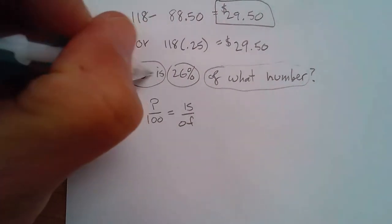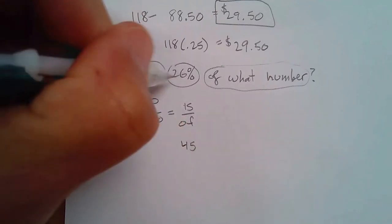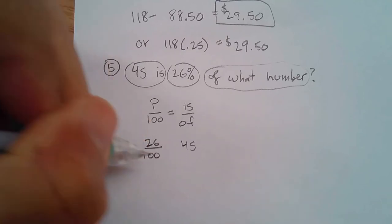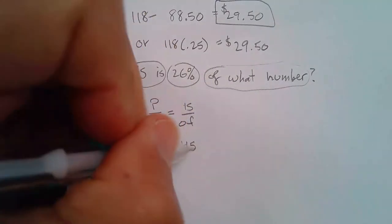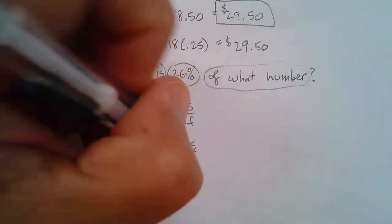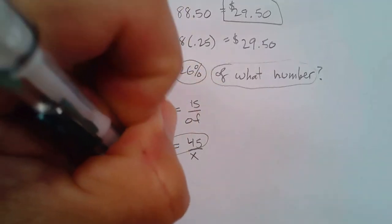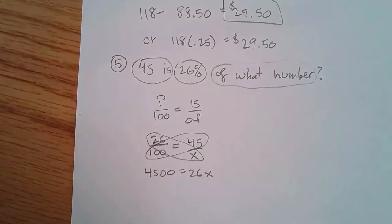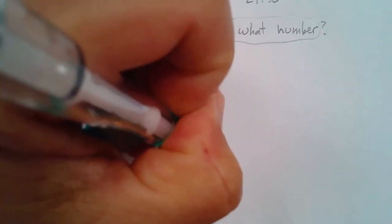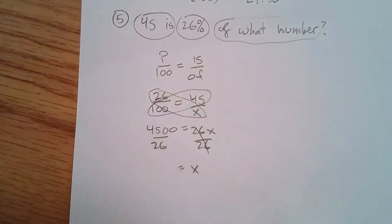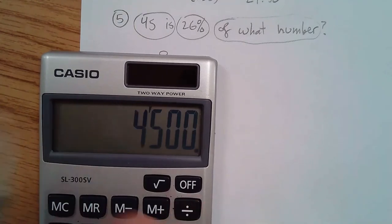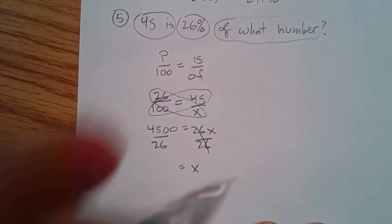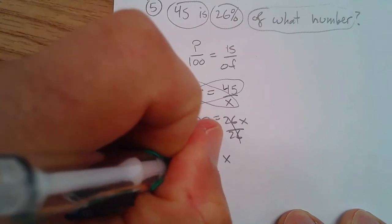We can set up a proportion. 45 is the 'is,' so 45 goes on top right. The 26 is the percent, so that's 26 over 100 on the bottom left. 'Of what number?' — that's where X goes. Cross-multiplying: 45 times 100 is 4,500, and that equals 26 times X. Dividing both sides by 26 gives 4,500 divided by 26, which is approximately 173.076.